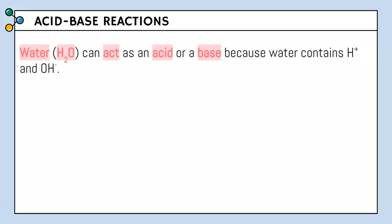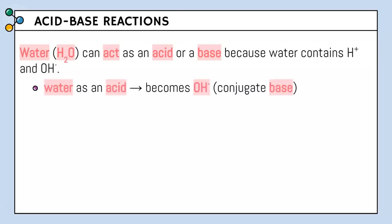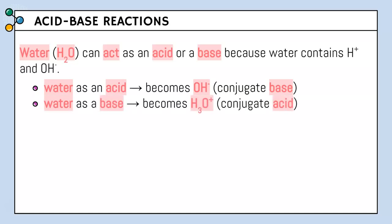Water, H2O, can act as an acid or a base because water contains both H+ and OH-. If water is an acid, it's going to become OH- at the end of the reaction — that's our conjugate base. And water as a base will become H3O+, and that's a conjugate acid.